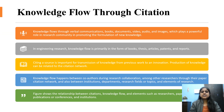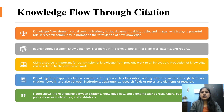Knowledge flow occurs through verbal communications, books, documents, video, audio, and images, which play a powerful role in the research community in promoting the formulation of new knowledge. In engineering research, knowledge flow is primarily in the form of books, theses, articles, patents, and reports. Citing a source is important for transmission of knowledge from previous work to innovation. Knowledge flow happens between co-authors during research collaboration, through paper citation networks, and also between institutions, departments, research fields or topics, and elements of research.